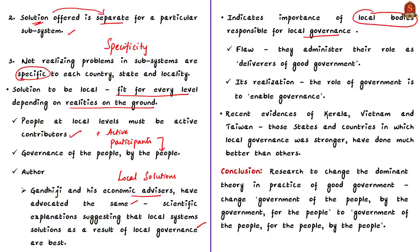This indicates the importance of local bodies responsible for local governance, such as panchayats and municipalities. The author additionally focuses on other key functionaries in local governance such as district collectors. One flaw noted is that district collectors have come to merely deliver government donations in the name of schemes, without much active role. There are also many schemes initiated by central and state governments separately, leading to overlapping benefits or a lack of expected benefits for the targeted people, due to insufficient active participation at local levels.